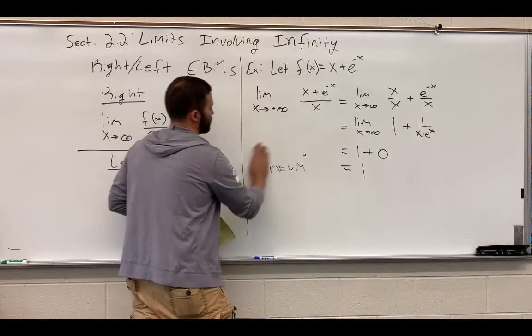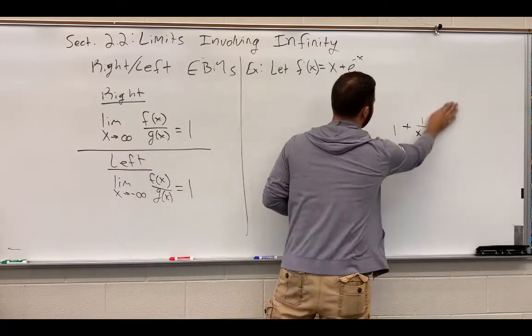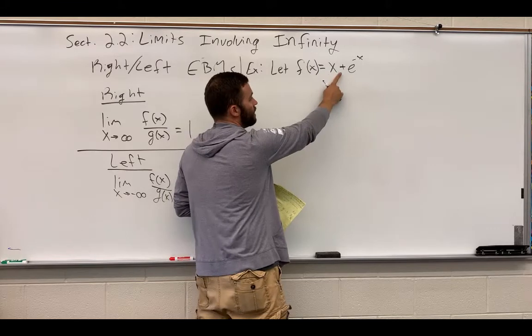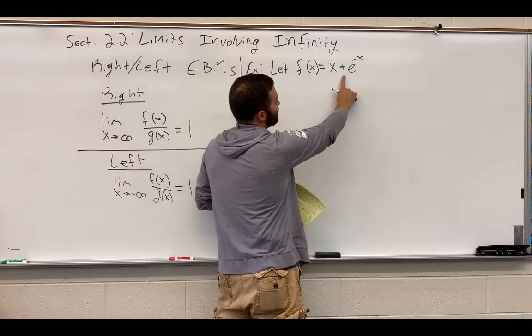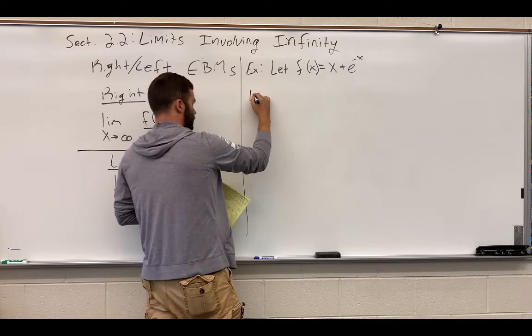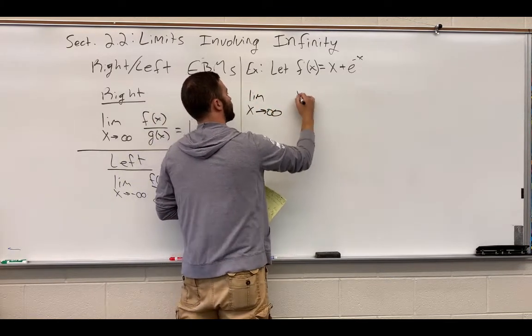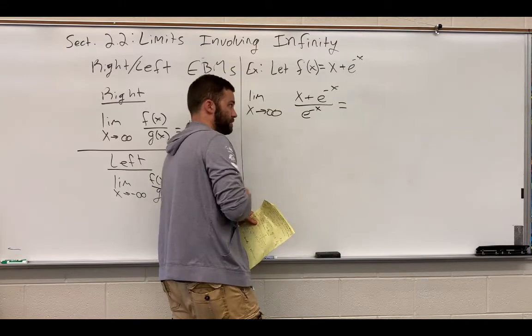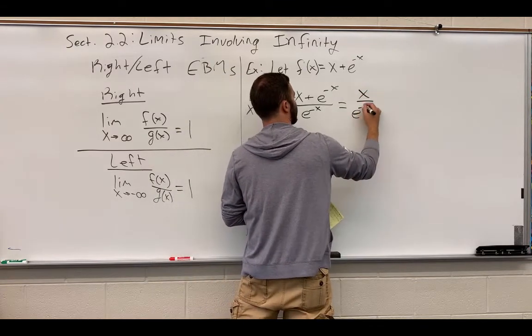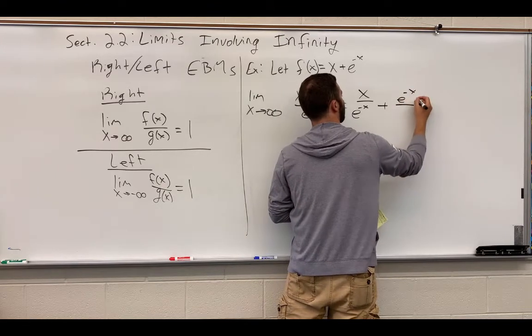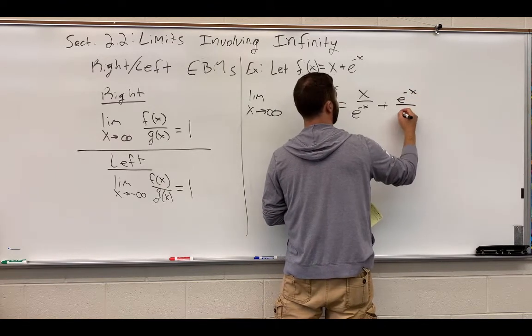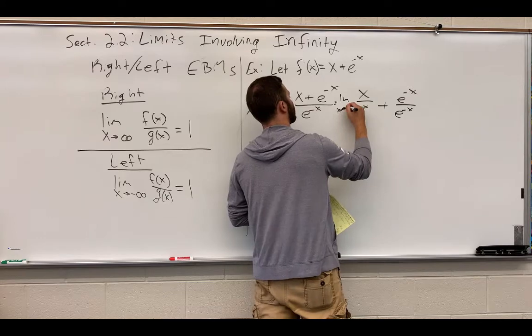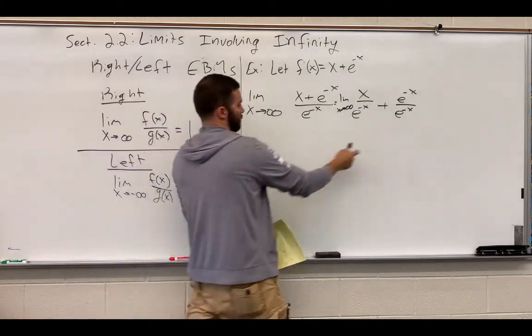Now that we've got that out of the way, let's check and find the left end-behavior model. Again, we're looking at the function to figure out what that might be. We've already used x, we know it's probably not going to be x. Let's check e to the negative x. We'll look at the limit as x approaches infinity of x plus e to the negative x divided by e to the negative x. I'm going to break this into two fractions, so I have x over e to the negative x plus e to the negative x over e to the negative x. I've got to write the limit notation, limit as x approaches infinity.